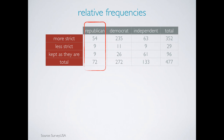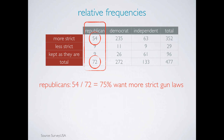Let's start with the Republicans. There are 72 Republicans in this sample, and 54 of them want more strict gun laws. So the percentage of Republicans who want more strict gun laws is 54 over 72, which is 75%.